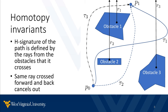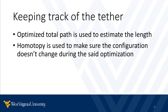The H-signature of tau2 would simply be zero, or null homotopy, because it doesn't cross any rays. The H-signature of tau1 would be R2, R3, minus R3, but the latter part cancels out, leaving the signature only as R2. Knowing all that, we keep track of the tether, which we assume is retractile, by optimizing the total path taken by the robot to make it as short as possible while still retaining its H-signature. That last part is very important, because if the H-signature changes, it will mean that this approximation will no longer represent the real-world configuration of the tether. Knowing the tether configuration also allows us to get an approximation of its length, and the said configuration can now be directly used in our algorithm.